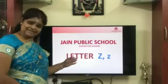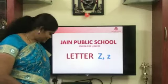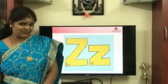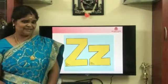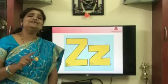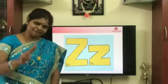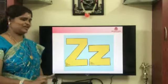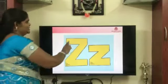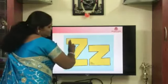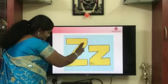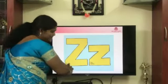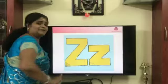This is letter Z. Shall we trace it? Capital letter and small letter. Keep your fingers like that. Come on, let us trace. Sleeping line, slanting line, sleeping line.